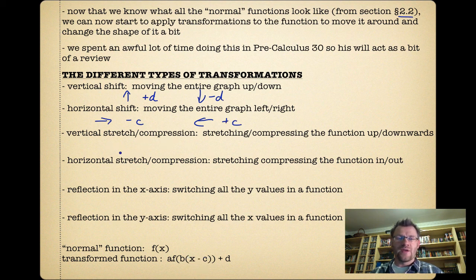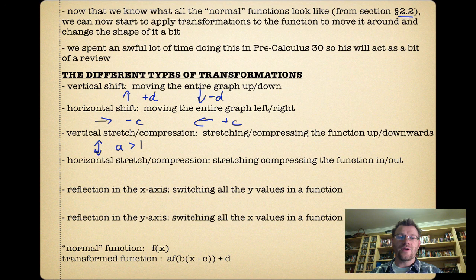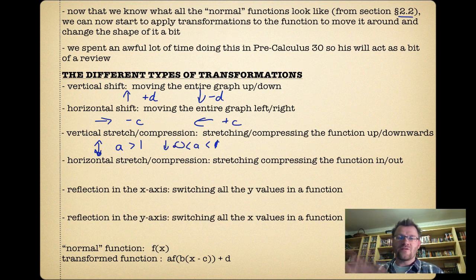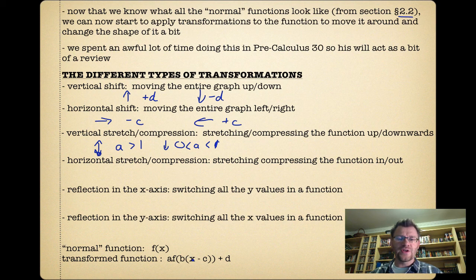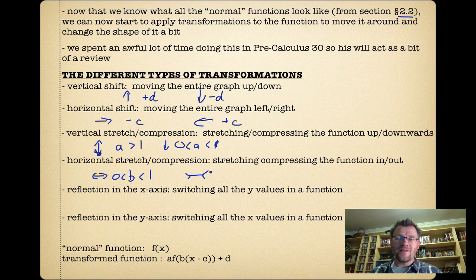A vertical stretch or compression is given by the letter a. If a is greater than 1, that's a vertical stretch—getting bigger. If a is between 0 and 1, a fraction, then it's getting squashed vertically. Horizontal stretch is the letter b, and this is kind of the opposite. It's stretched out if b is between 0 and 1, and it's squashed inwards if b is greater than 1.